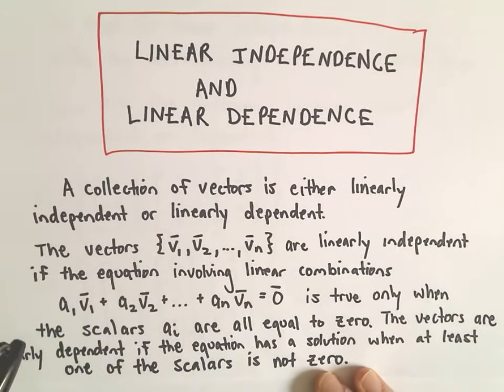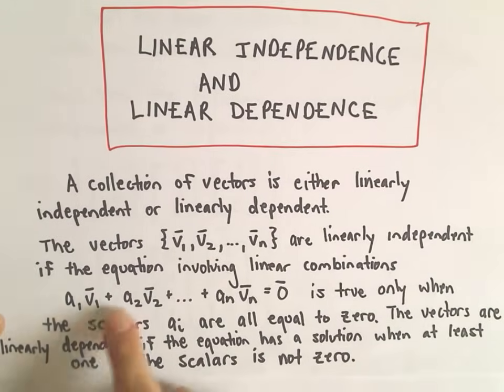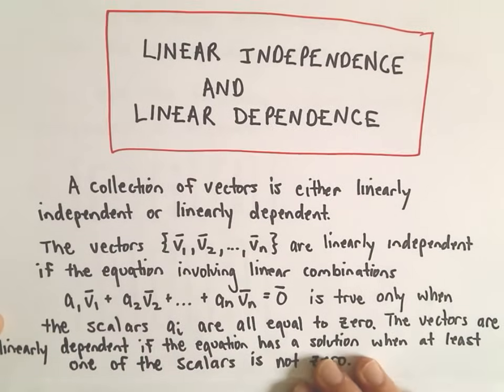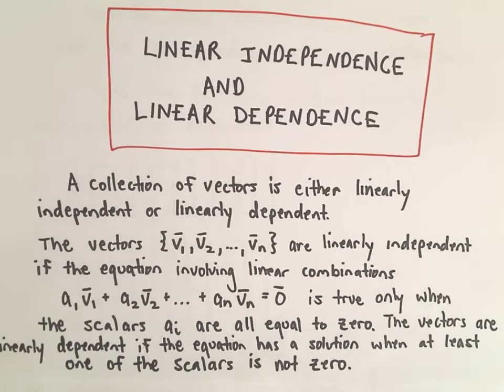If this equation is true when at least one of the a sub i's is not zero, well then we say at that point that the collection is linearly dependent.